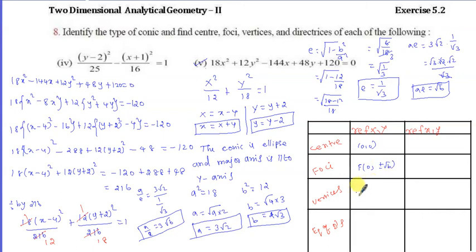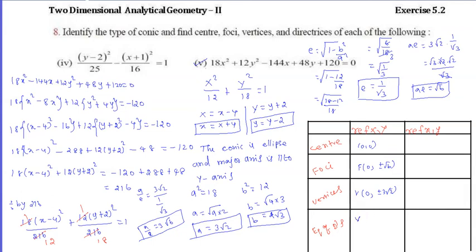The foci along the y-axis are at (0, plus or minus root 6) in X, Y coordinates. The vertices are at (0, plus or minus a), that is (0, plus or minus 3 root 2). The equation of the directrices is Y equals plus or minus a by e, which equals plus or minus 3 root 6.